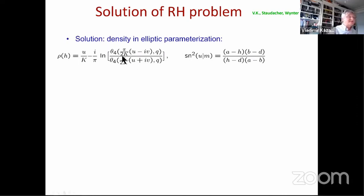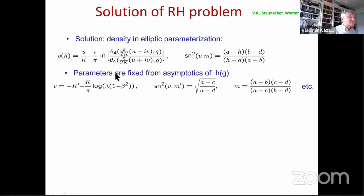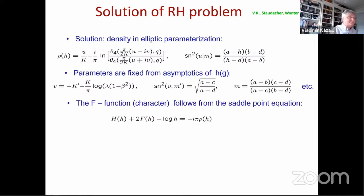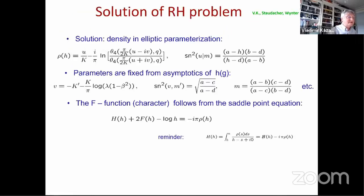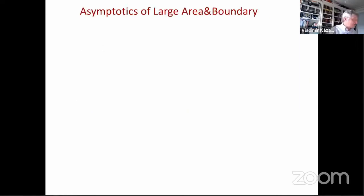It appears we have only two cuts on the corresponding sheet, and for the function 2f + h we have just an elliptic Riemann surface. We can immediately solve it via Cauchy integrals — contour integrals surrounding the cuts of f and h. The solution is obtained explicitly, as we found with Staudacher and Wintner, for the density of highest weights in terms of elliptic theta functions and elliptic sine functions with parameters expressible through the original couplings via asymptotics.